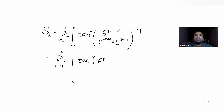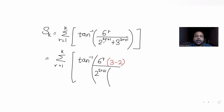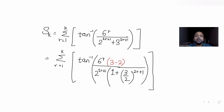If I adjust the 3 and 2 in the numerator, I know 6 raised to r is multiplied by 1, so I can write that 1 as (3 minus 2). What I am trying to do is make adjustments to convert the tan inverse expression into the form (x minus y) upon (1 plus xy), so I can then simplify it further.